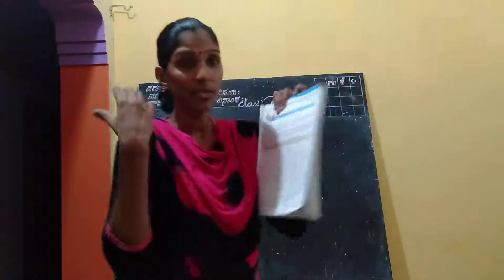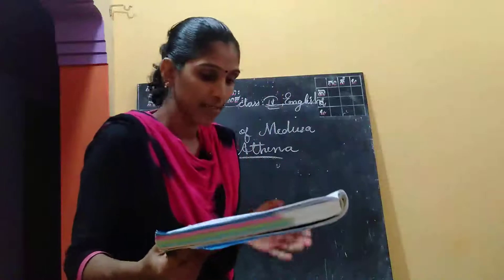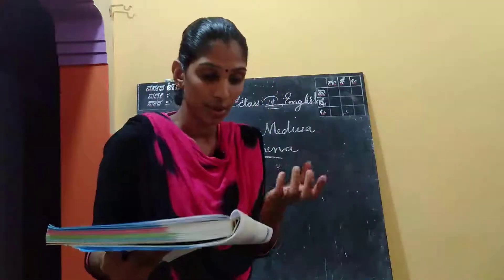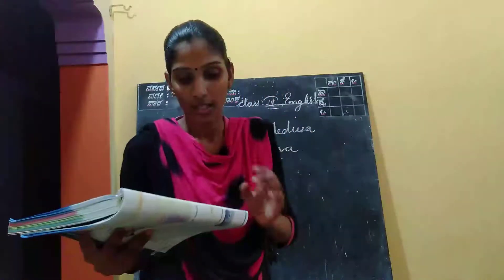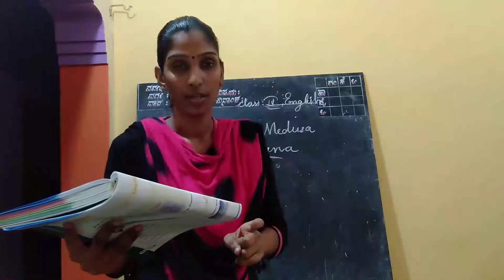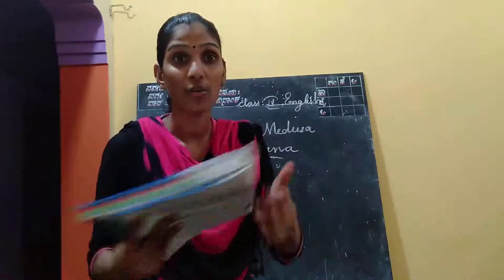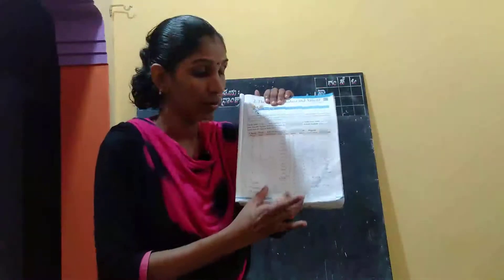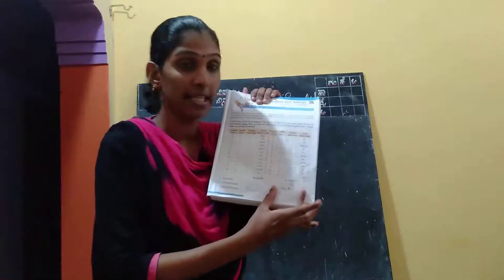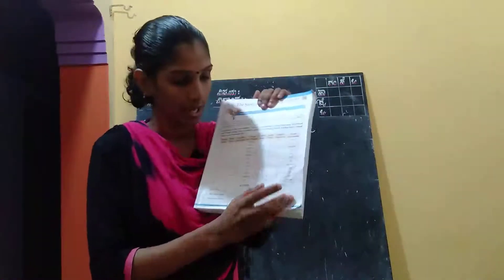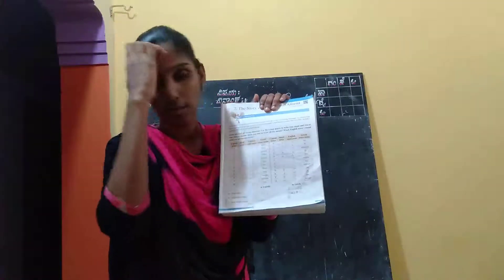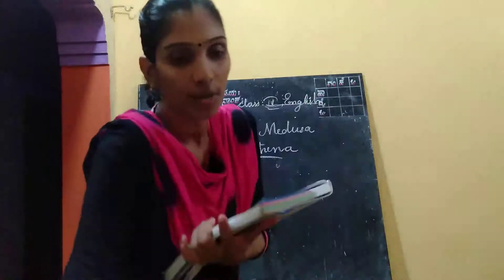And next, what is the activity? The activity is to write your name and two of your friends' names. First you have to write in English, and then you have to write the same names in Greek as well.